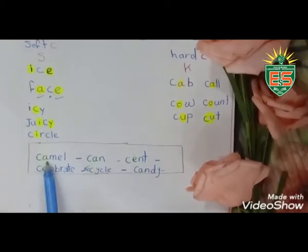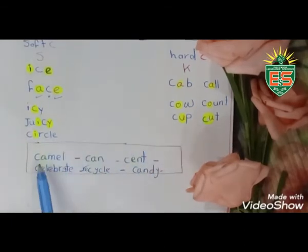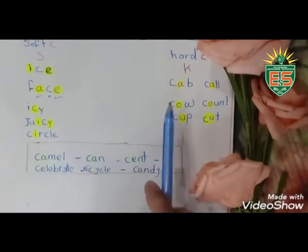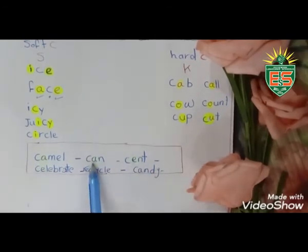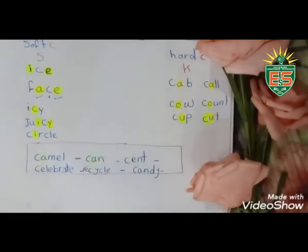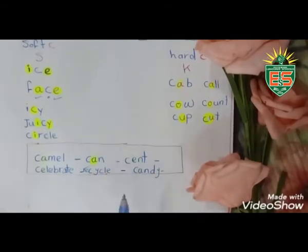I can't say 'samel', so here I put 'camel' in hard C. Another one: I have A after C, so I pronounce it 'k'—can. So I put it in hard C.